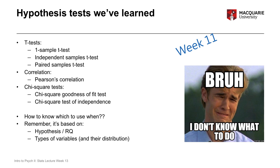If your variables are numeric, what kind of distribution do they have — are they normally distributed or do they have other kinds of distributions? The third thing to think about is the assumptions that go along with each test. Assumptions are criteria that should be met in order for the test to be valid and meaningful. Those are the three pieces of information you should use to decide what test to run.